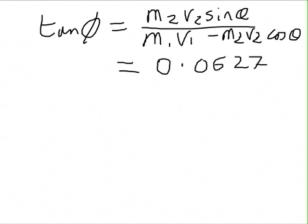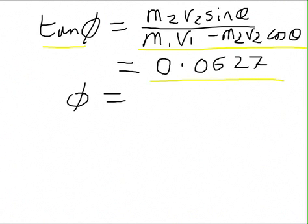So, if we do the calculation, divide those two equations, we end up with tan phi equals this. The m3s cancel and if you plug the numbers in with the calculator, you end up with this. So, you take arctan and you end up that phi equals 3.6 degrees.